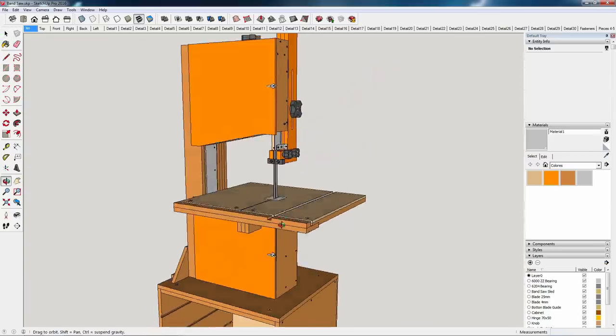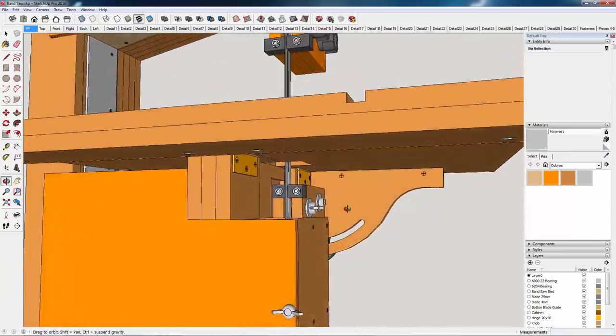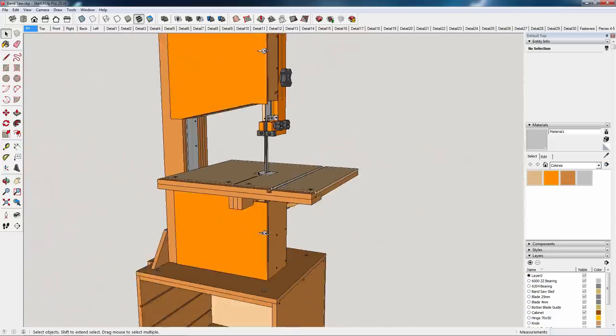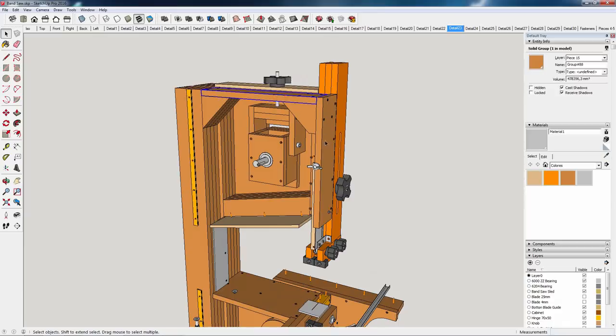This is the third video in the series where I show you how I built my new bandsaw. This time I'll be showing you how to make the guides for the blade and the saw's table, but before that I'll start by putting these parts in the upper part of the saw.